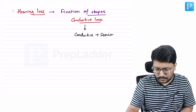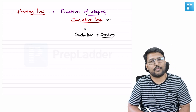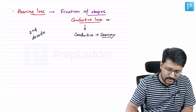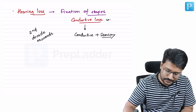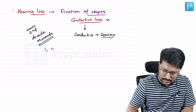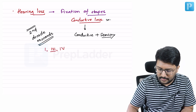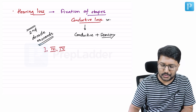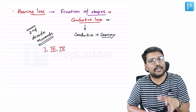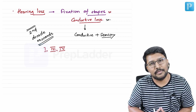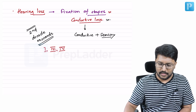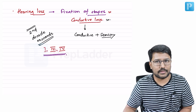Hearing loss in osteogenesis imperfecta typically becomes evident from the second decade onwards. The types known to be associated with hearing loss are Type 1, Type 3, and Type 4. Type 2 is not associated with hearing loss because the stapes fixation usually occurs in the second decade, and most Type 2 patients do not survive to that age.